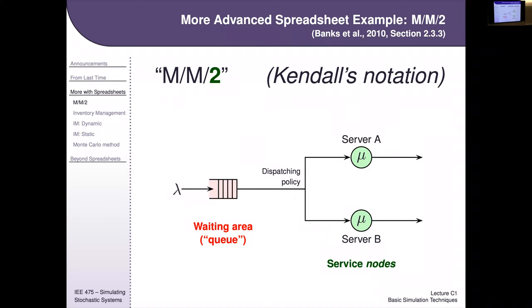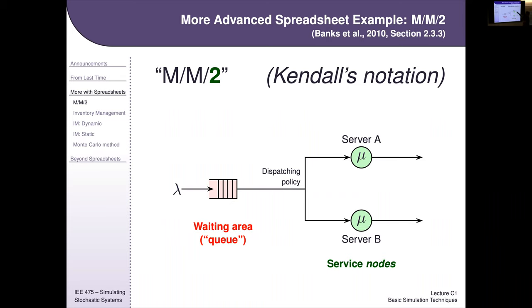Going from an MM1 to an MM2 queue means one single queue with exponential inter-arrivals, but now that queue feeds two servers — server A (Able) and server B (Baker). Based on a dispatching policy, whoever is at the head of the queue goes to whichever server is free. If both are free, we need some way to decide who gets served first — that's what we mean by dispatching policy.